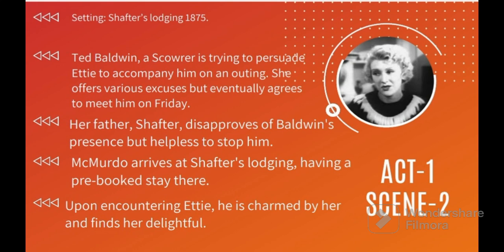In Scene 2, the setting is Shafter's Lodging, 1875. Ted Baldwin, a scourer, is trying to persuade Etty to accompany him on an outing. She offers various excuses but eventually agrees to meet him on Friday. Her father, Shafter, disapproves of Baldwin's presence but is helpless to stop him. McMurdo arrives at Shafter's Lodging, having a pre-booked stay there. Upon encountering Etty, he is charmed by her and finds her delightful.